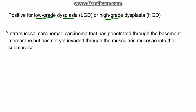The last category is intramucosal carcinoma: when dysplastic cells have penetrated through the basement membrane but have not yet invaded into the muscularis mucosae, meaning they have not entered the submucosa. If the dysplastic cells have invaded into the muscularis mucosae and then into the submucosa, it is straightforward invasive carcinoma.